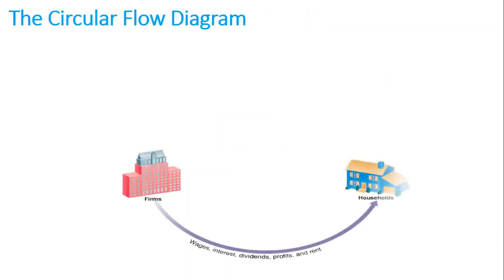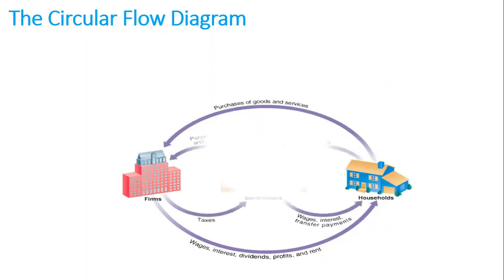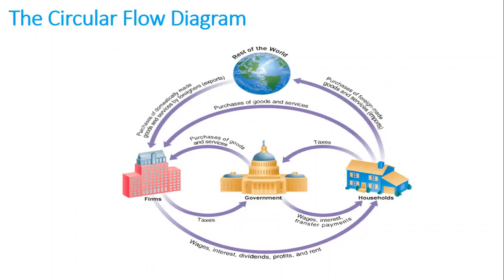In order to understand how the macroeconomy works, it can be challenging because a great deal is going on at one time — everything seems to affect everything else. To see the big picture, it's helpful to divide the participants in the economy into four broad groups. This is why we have the circular flow diagram, which shows the income received and payments made by each sector of the economy. Households receive income from firms and the government, purchase goods and services from firms, pay taxes to the government, and purchase foreign-made goods and services — those are the imports.